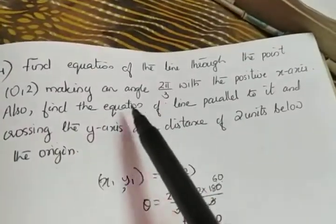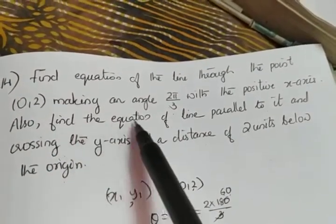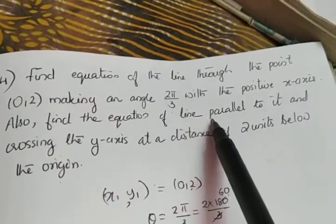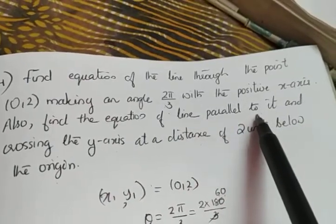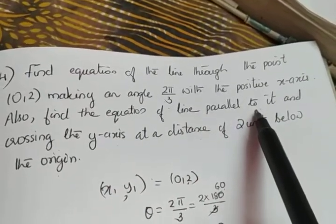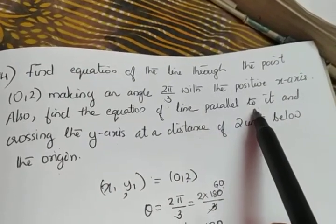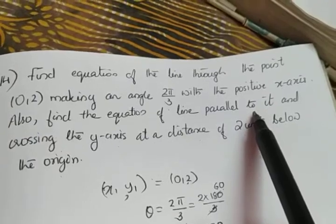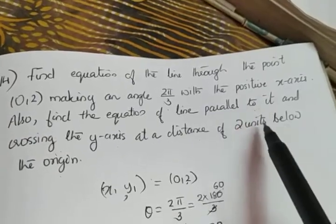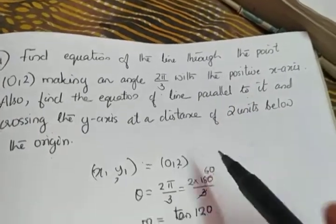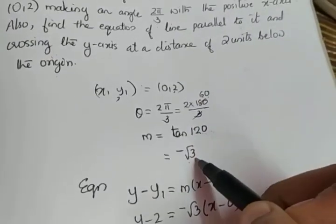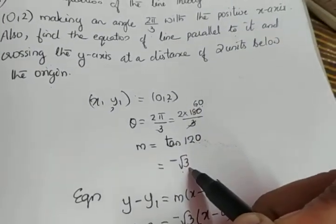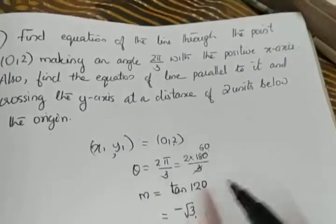For the second line, we have to find the equation of a line parallel to it. The key property of parallel lines is that their slopes are equal. So the second line will also have a slope equal to −√3.